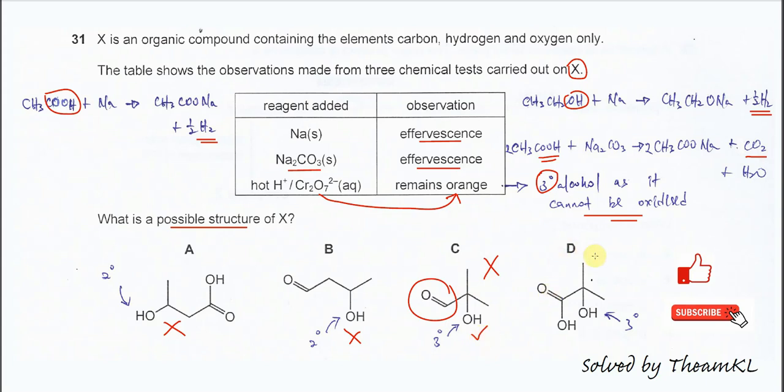For D, this is the tertiary alcohol because this carbon with three alkyl group: one, two, three. The carbon with OH with three alkyl group. So that's why this is tertiary alcohol.